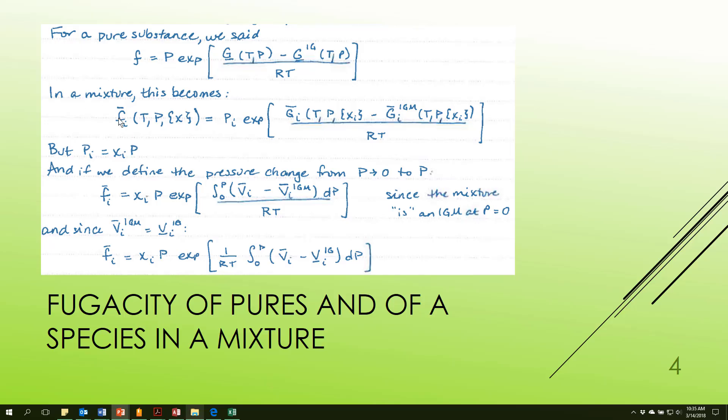We end up with this expression here, replacing things for a per species quantity in every case. But p sub i is the mole fraction times the total pressure, so I can change that. And these are simply going to be this integral because I'm looking at this as I change the pressure.